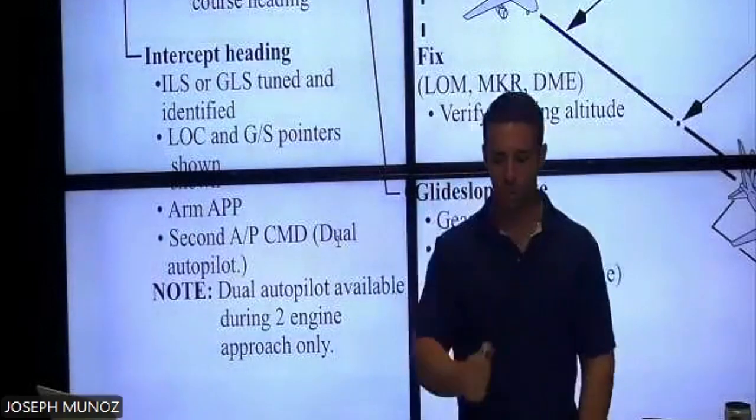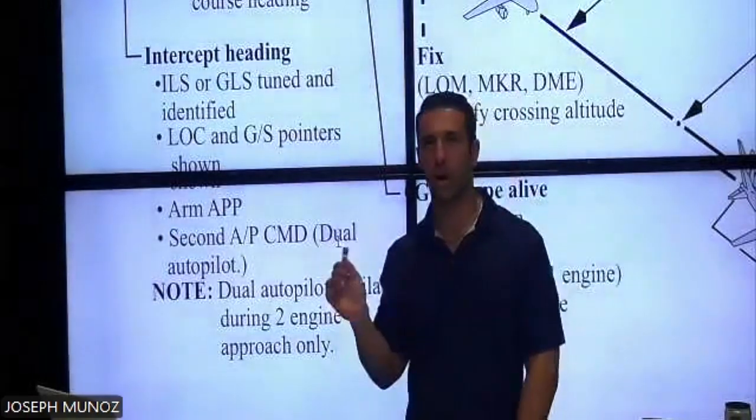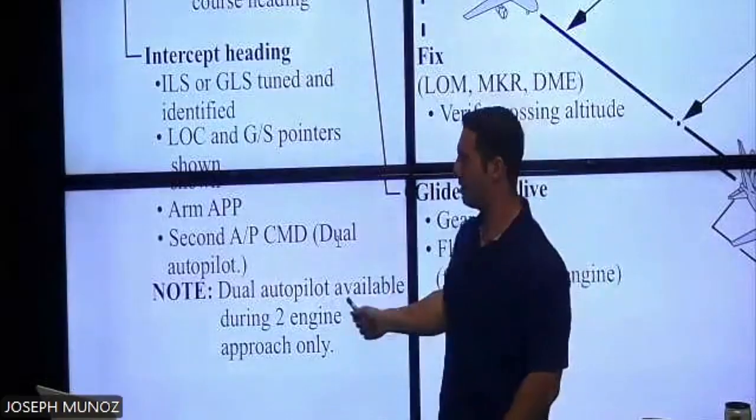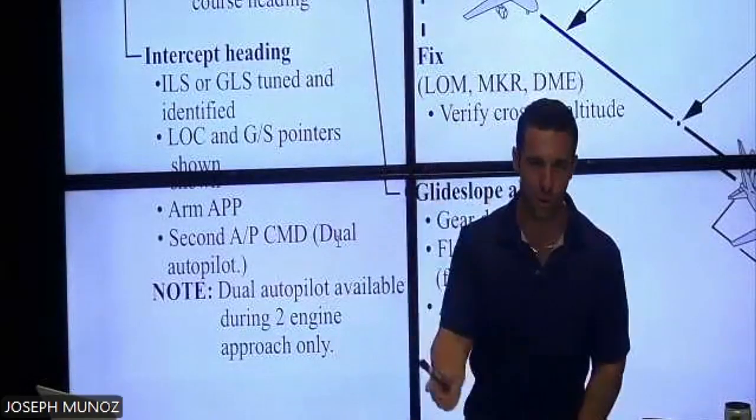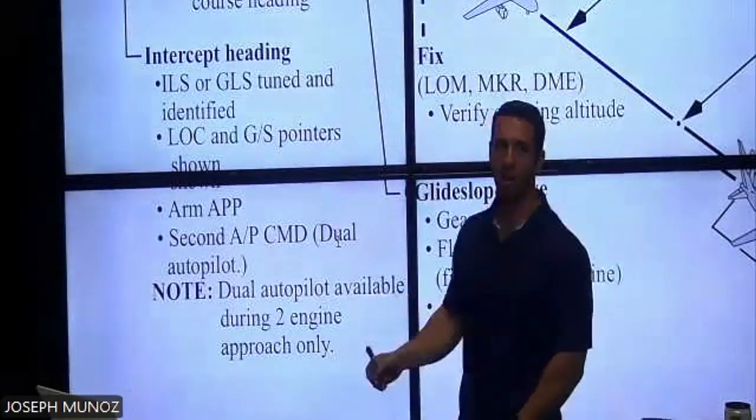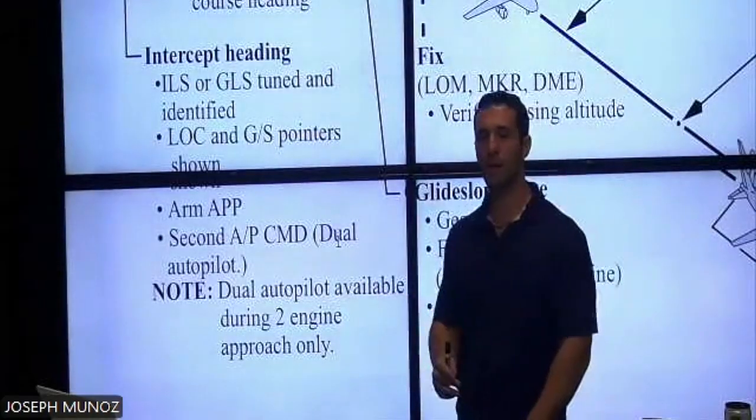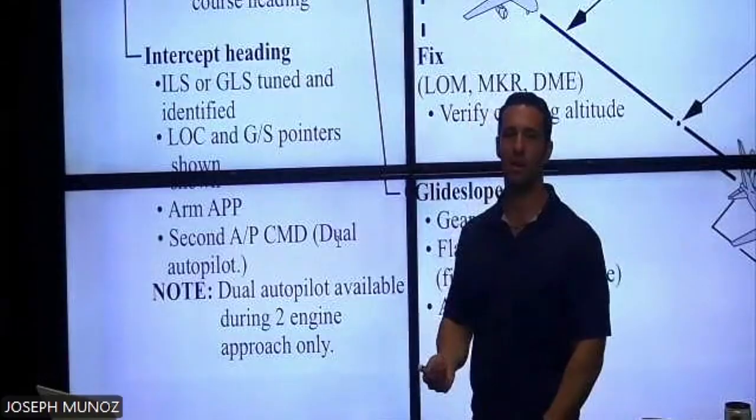So this goes back to what Miguel said earlier. Can it do an auto go around single engine? No, because in order to do an auto go around, I need two autopilots. And in order to use two autopilots, I need two engines. And so if I'm single engine, it won't do it. So you're going to have to hand fly the single engine ILS.